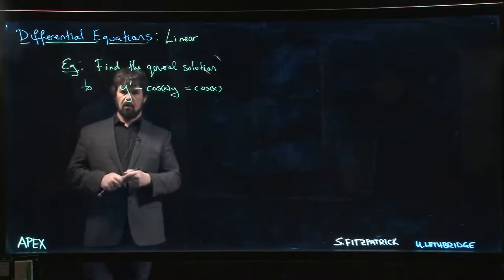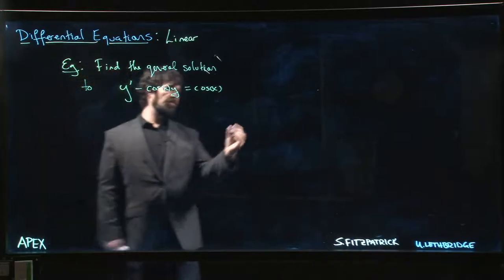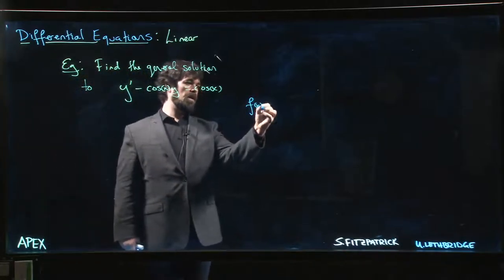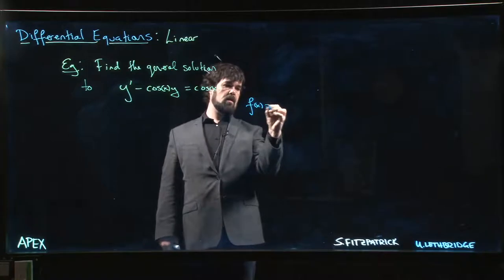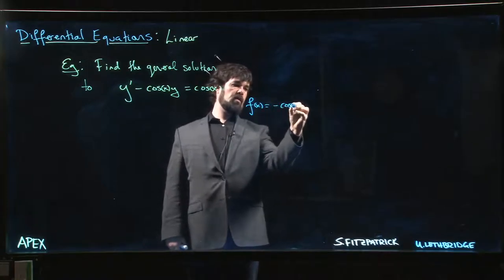We identify our function. So our f of x in this case, f of x is going to be minus cosine x.